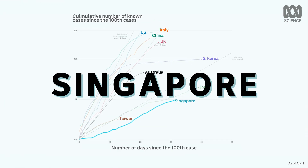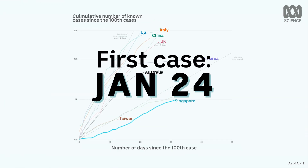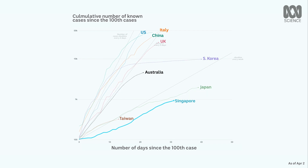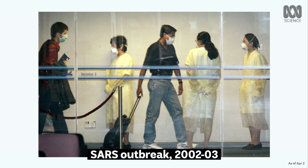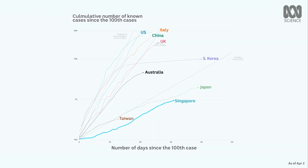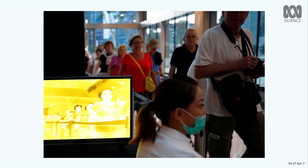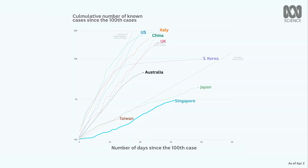So what have other countries done to flatten the curve? Singapore reported its first case of coronavirus just one day before Australia's first case. However, like many Asian countries, it had learned important lessons from past epidemics. Within three days of its first case, it had implemented thermal scanning at Changi International Airport. A strict quarantine on anyone who had been in Hubei followed, and a few days later, it barred all visitors who had been in China within the past 14 days. When there were 75 confirmed cases, the government issued a stay-at-home notice to everyone who had been in China in the previous two weeks.